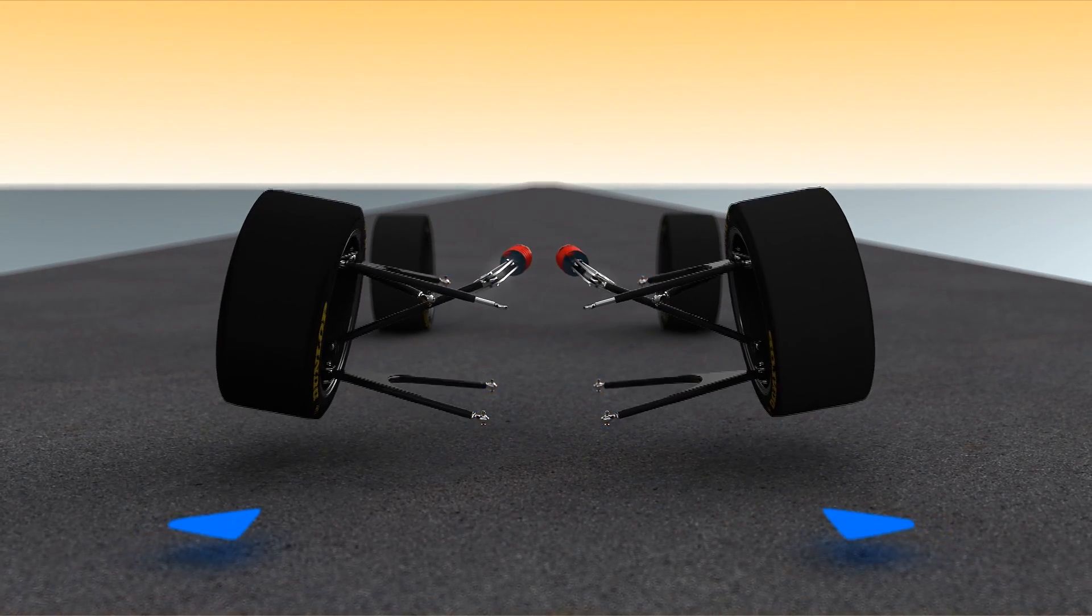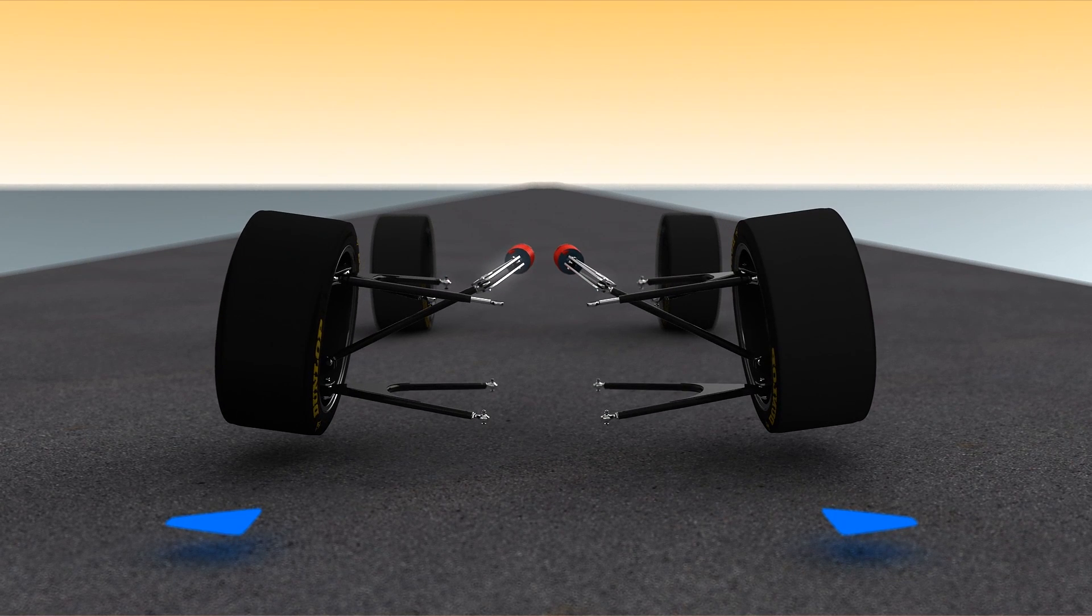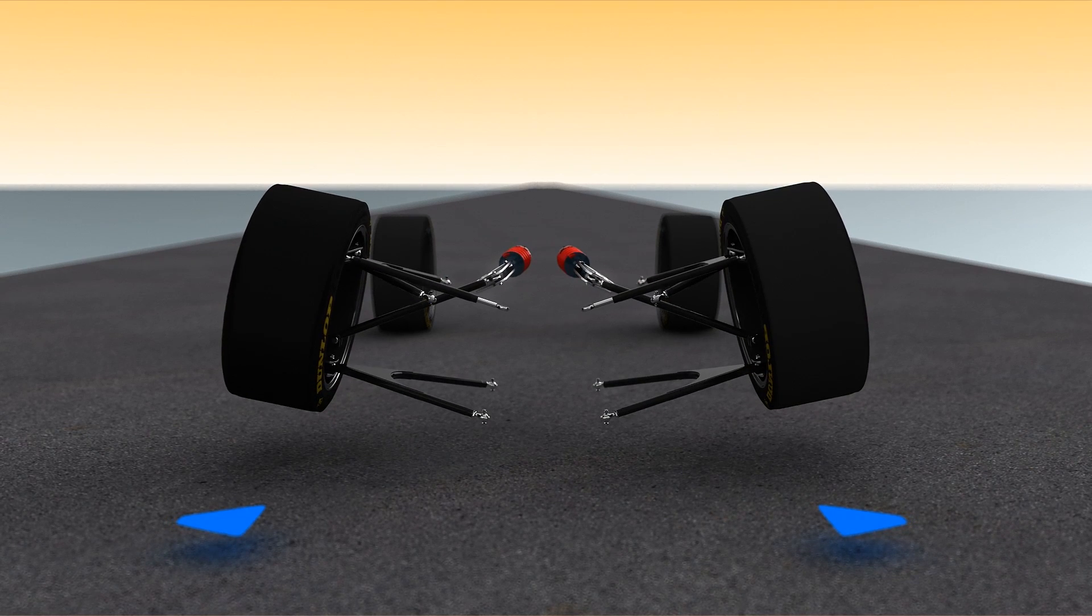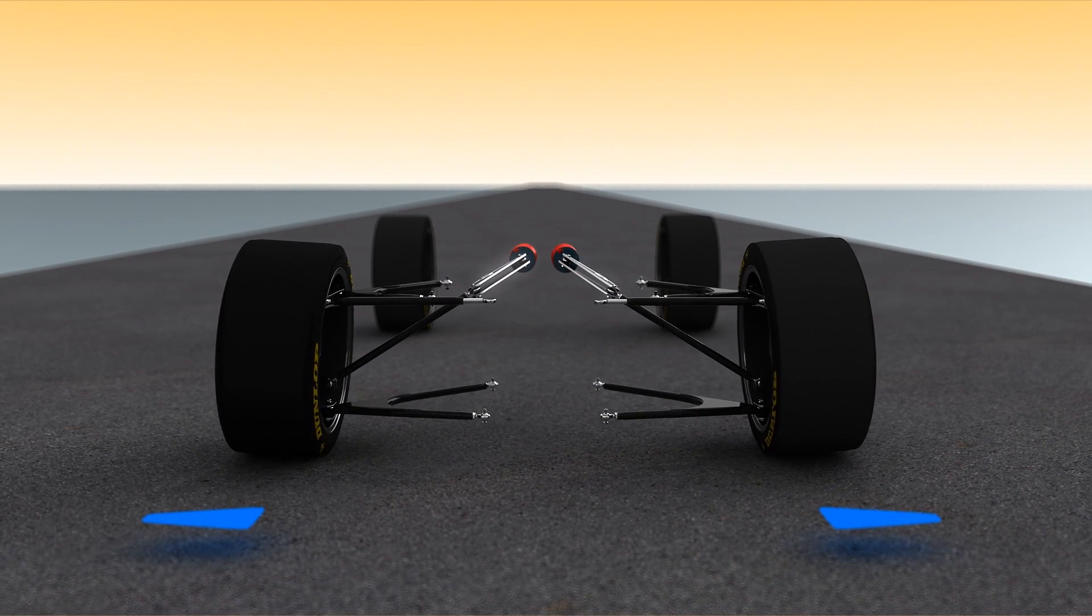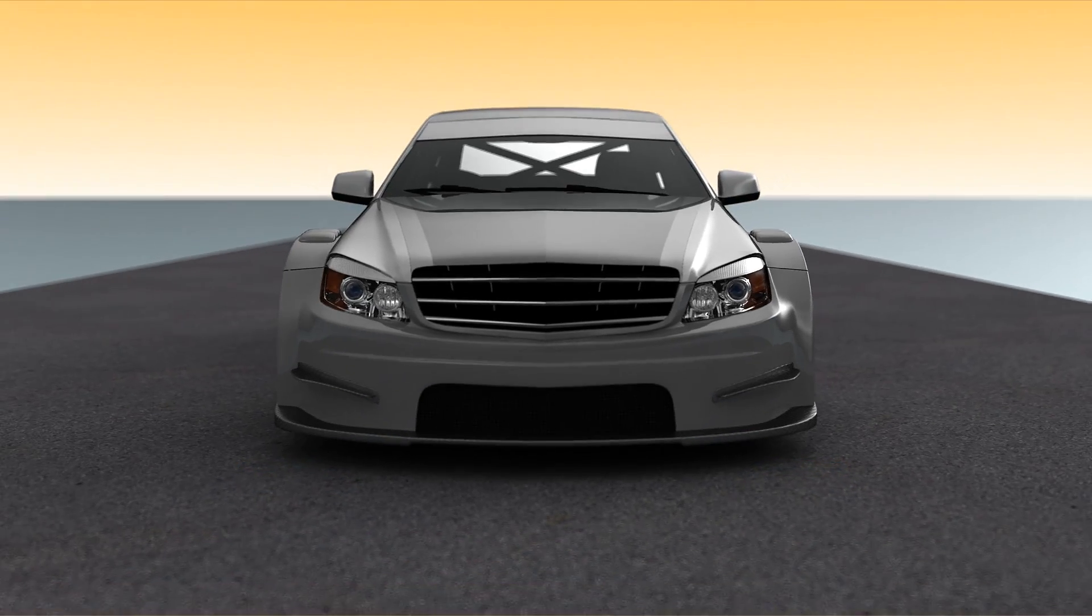If the upper arm shortens, the tires tilt inwards when the spring compresses, creating a negative camber. This stabilizes the car in extreme situations.